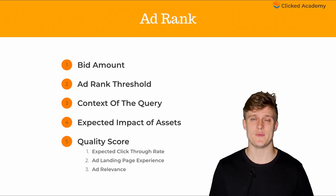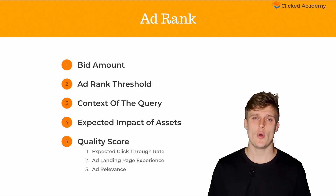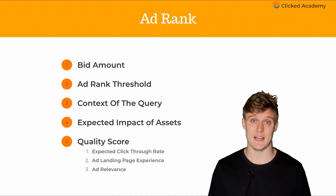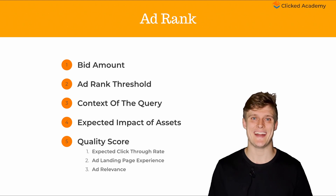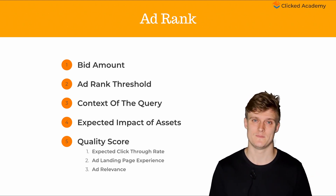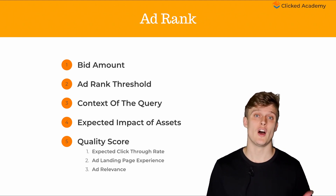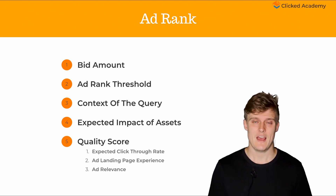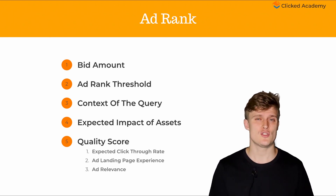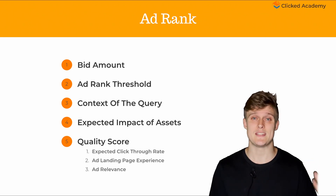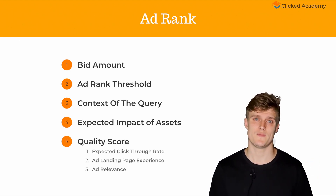Your quality score is determined by three key elements. The first one is the expected click-through rate, which is Google's prediction of how often your ad will be clicked when shown in the search results. This is calculated by how many times your ad appears in the search results — an impression — and how many times your ad is clicked on those appearances — a click. Impressions are divided by clicks to give you a click-through rate, or CTR. So if you appear for 100 searches, that means you have 100 impressions, and if you receive two clicks, that equals 2 divided by 100, which is 2% — a 2% click-through rate.